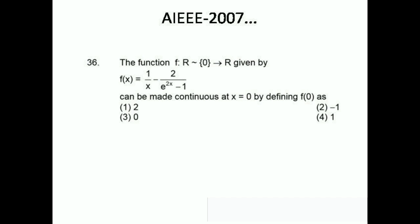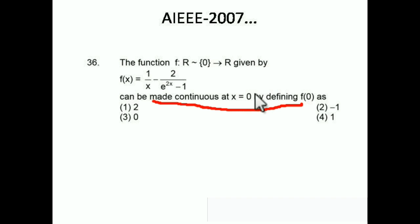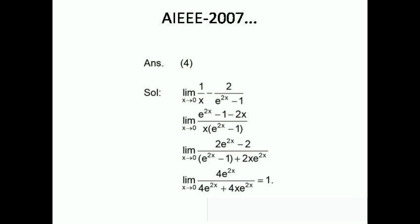Now let's see one more from AEE 2007. The function is given from R\{0} to R by f(x) = 1/x - 2/(e^(2x) - 1), which can be made continuous at x = 0 by defining f(0). Since the function is continuous at x = 0, the limit must exist at that point. Taking the LCM, the expression becomes (e^(2x) - 1 - 2x) / (x·(e^(2x) - 1)).